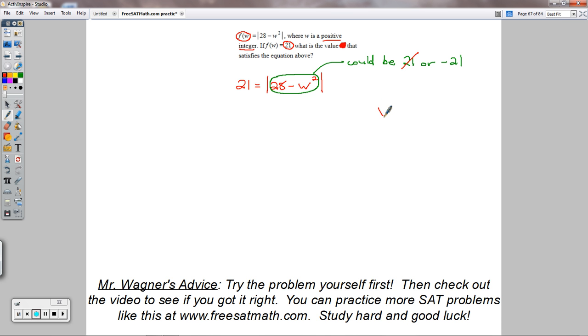And so we know w squared could be 49. That makes w equal to 7. 7 is a positive integer. The square root of both sides here yields that.